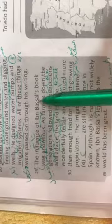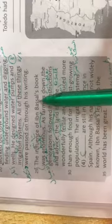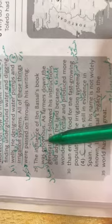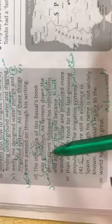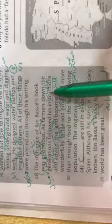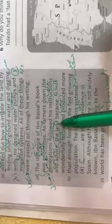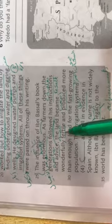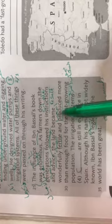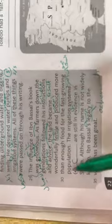The last paragraph is about the influence of Ibn Basal's book. The influence of Ibn Basal's book was enormous, huge, very big. Farmers down the generations followed his instruction and advice. What was the result? The land became wonderfully fertile and produced more than enough food for the fast growing population.